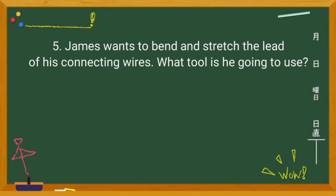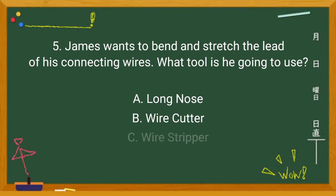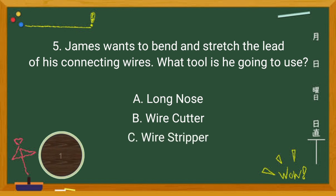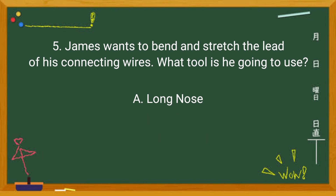Number 5: James wants to bend and stretch the lead of his connecting wires. What tool is he going to use? Letter A — Long nose. Letter B — Wire cutter. Or letter C — Wire stripper. If your answer is letter A, you got it right.